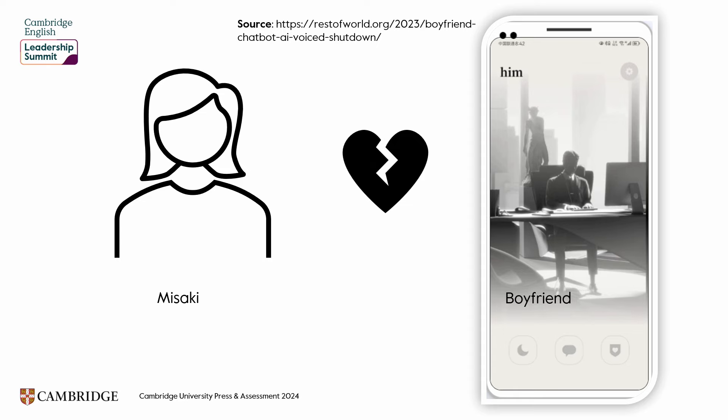The story of Misaki and the boyfriend — here is the app, which was called HIM. It's a real app and Misaki really was heartbroken. I think the story is interesting for several reasons. First of all, it shows how we tend to anthropomorphize — we project human characteristics onto things. For example, I had a camper van which I loved, it was like part of the family, and when we sold it I was devastated. So you can imagine when you're using an app and interacting with it in a very human-like way, we tend to anthropomorphize even more.